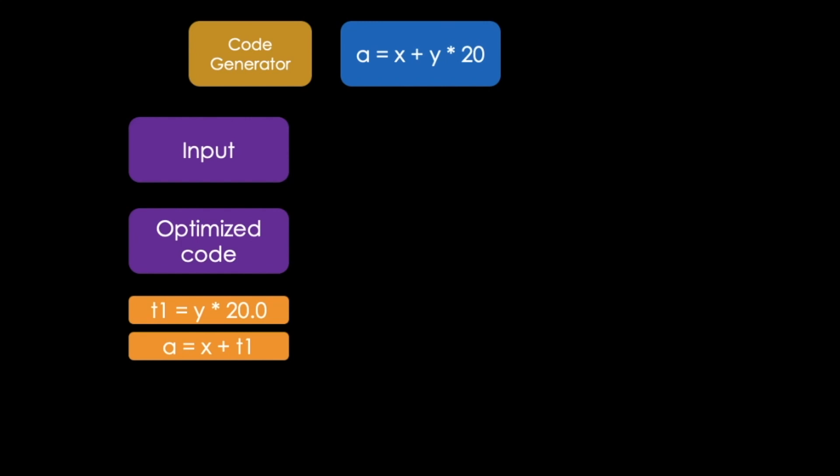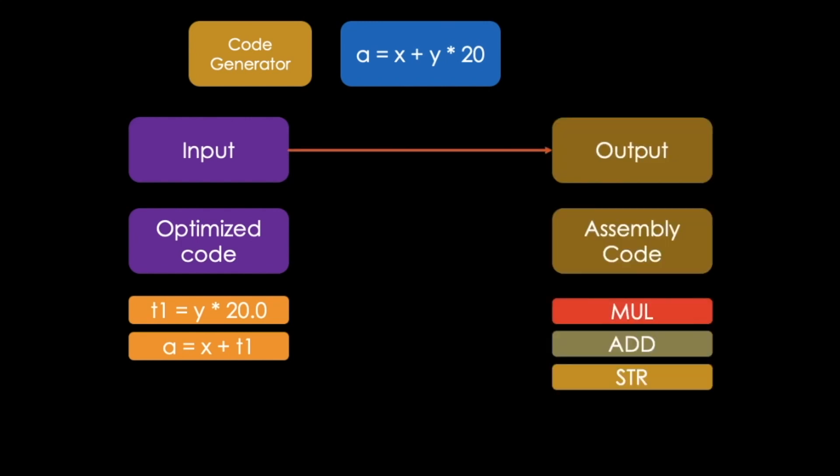In our final phase of the compiling process, a code generator is utilized. The optimized code is taken as an input, which is then converted into machine-readable target code. What you see here in the lower right corner is assembly code, which is easily understandable by the processor.